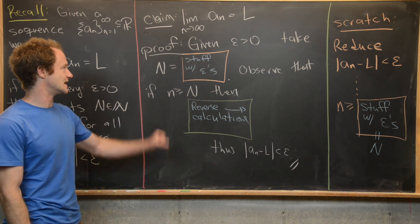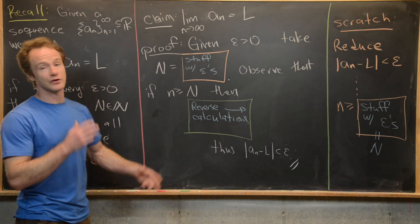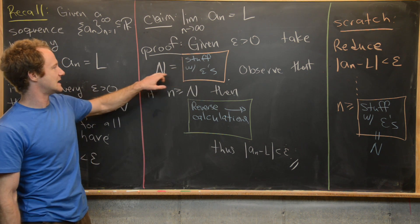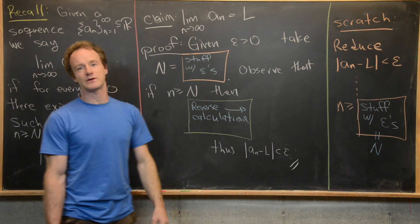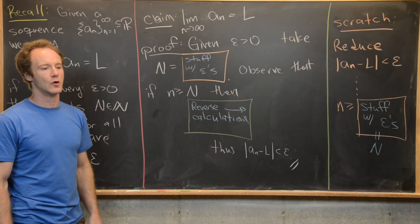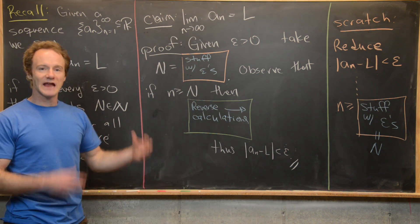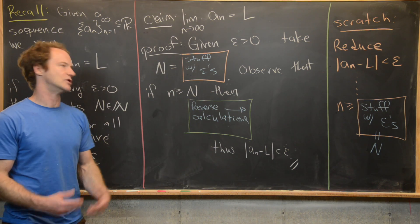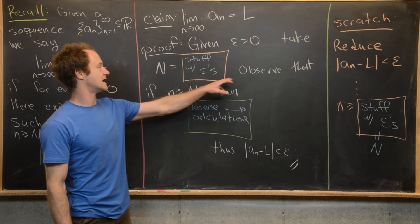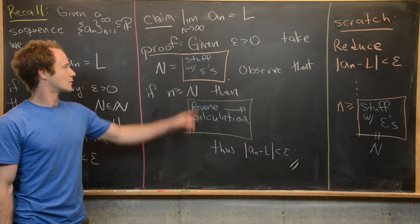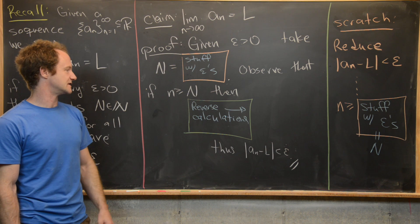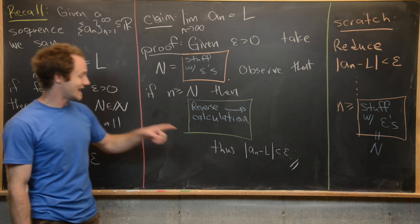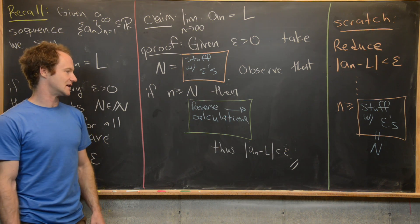Now that you've done the scratch calculation, you can launch into the proof. The structure is generally the same every time. Given epsilon greater than zero, take N to be equal to the value you calculated — this may seem like it comes from nowhere when reading the proof for the first time. Then use transition words like 'observe that' or 'notice that.' Say: observe that if little n is bigger than or equal to capital N, then reverse the calculations to end at the goal: absolute value of a_n minus L is less than epsilon.